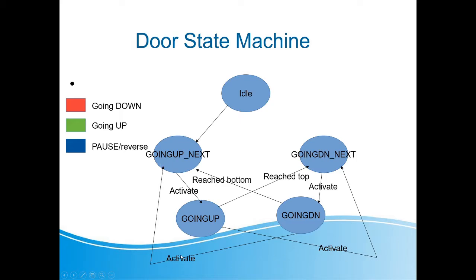If you are going up and hit activate, the machine pauses. Hit it again and it reverses — because you're going down it goes into 'up next' and then starts going up. So you have reversed by hitting activate twice after the door was moving and had not reached the bottom.